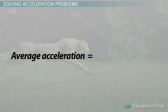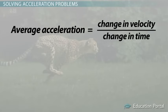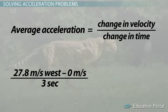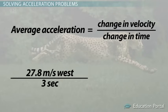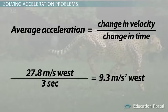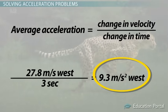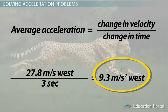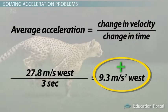Average acceleration equals change in velocity divided by change in time. Average acceleration equals 27.8 meters per second west minus 0 meters per second divided by 3 seconds, equals 27.8 meters per second west divided by 3 seconds, equals 9.3 meters per second squared west. This means that for every second the cheetah is running, his velocity increases by 9.3 meters per second. Since he is increasing his speed in a constant direction, west, this is positive acceleration. The directional term west is required because acceleration is a vector.